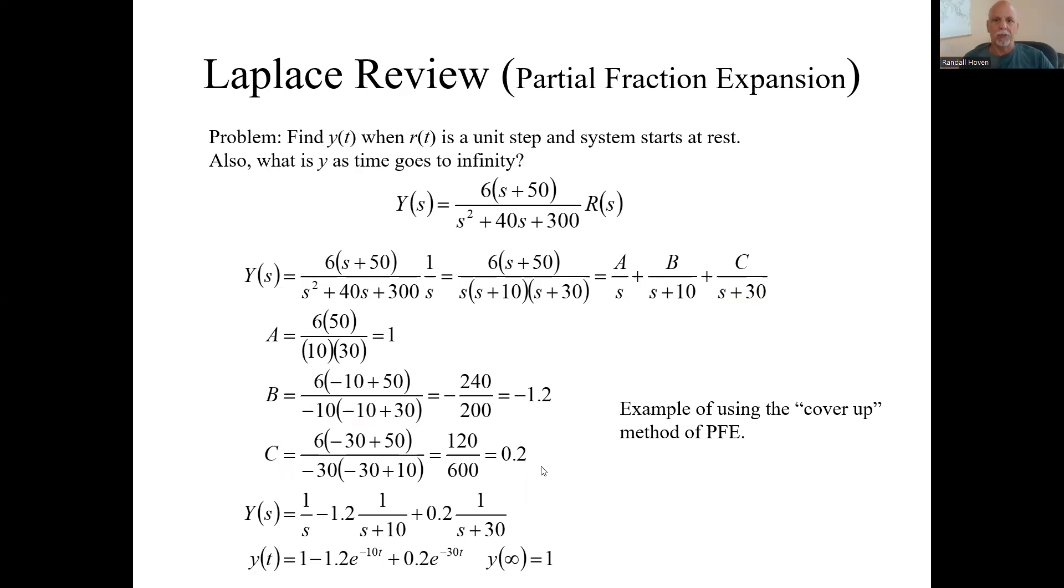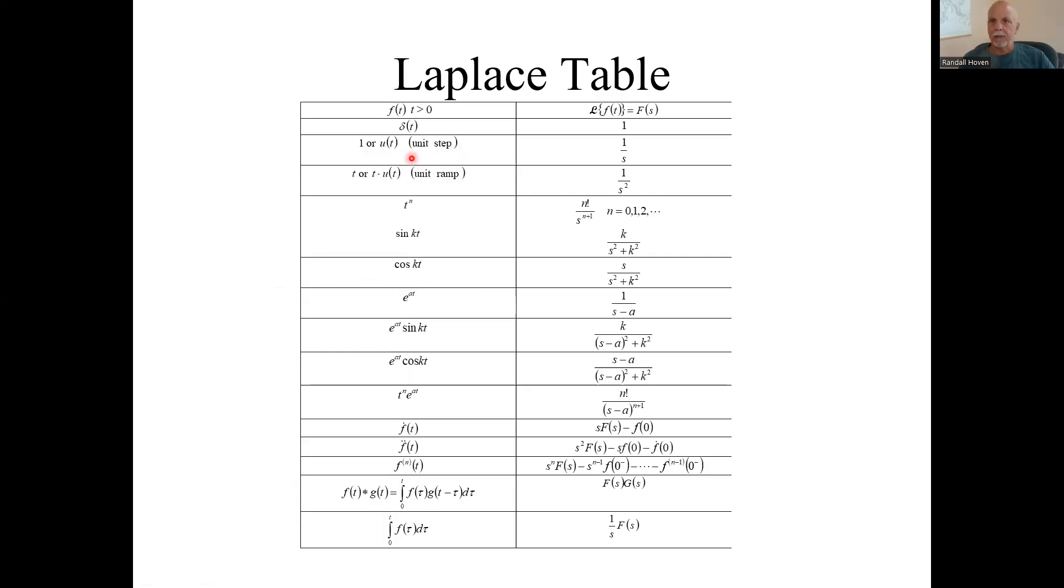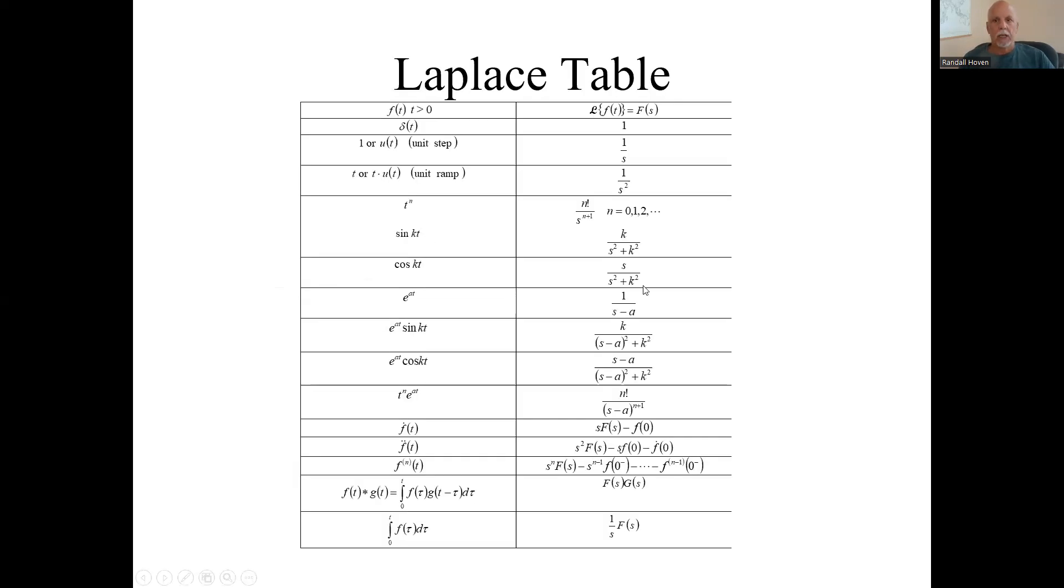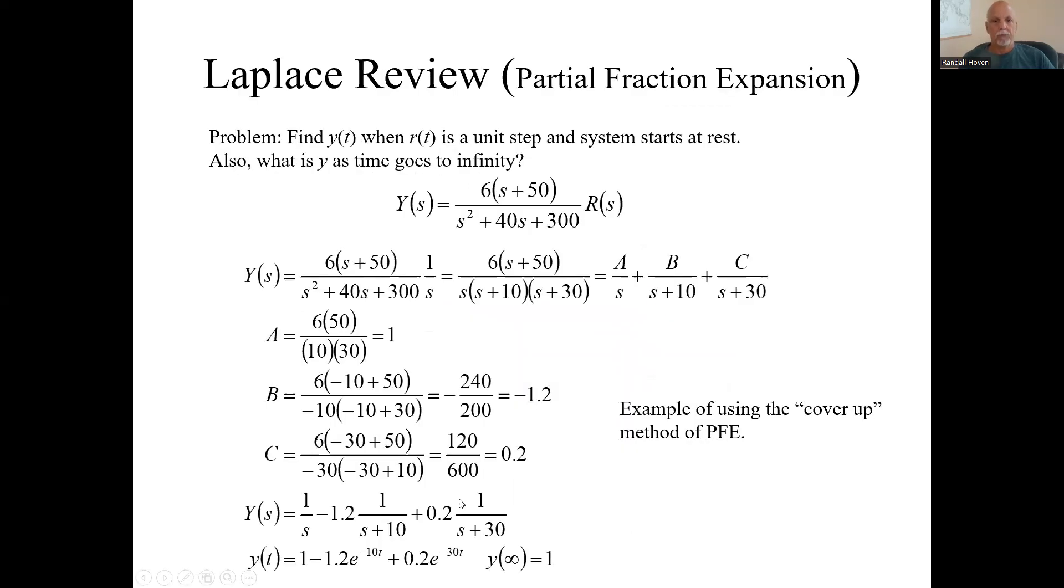Now you need to take the inverse Laplace transform. This one is just 1 over s. That's a constant. These other guys are like s plus a. It's e to the minus a. The signs are going to be opposite. So for those latter two terms, this is the term in the table we're using. Inverse Laplace transform becomes this guy: 1 minus 1.2 e to the minus 10t plus 0.2 e to the minus 30t.